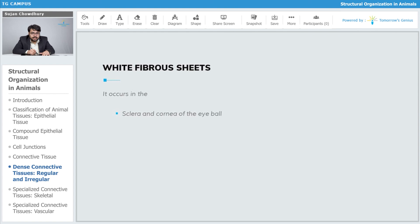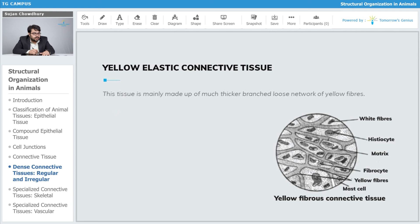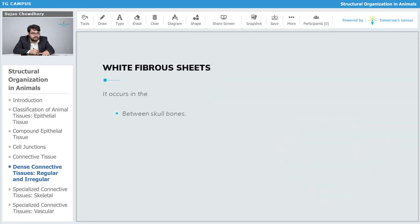At the sclera and cornea of eyeball, fibrous capsules of penis and testis, between the skull bones, and in adjacent areas. The white fibrous sheets are present in a sheet-like structure. It's a form of connective tissue, and its most important function is providing protection and support to organs which are prone to damage.